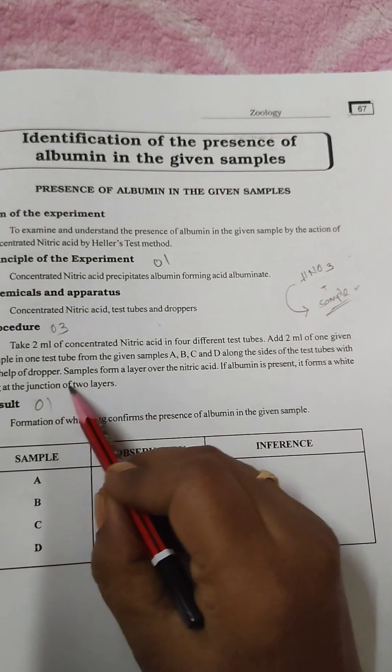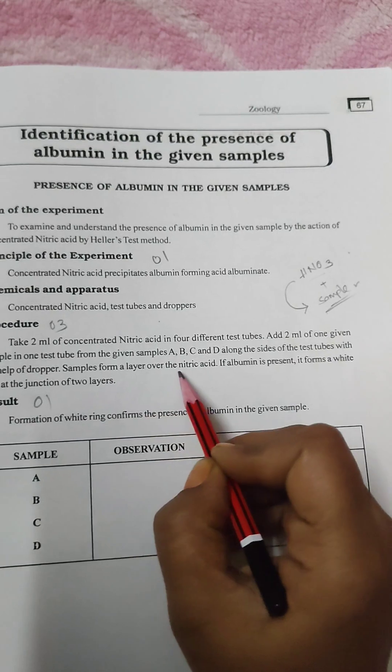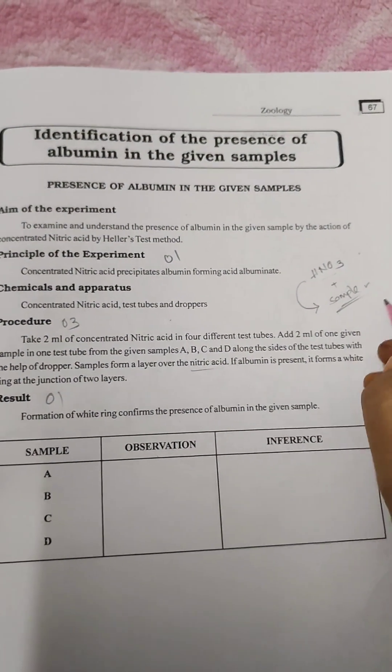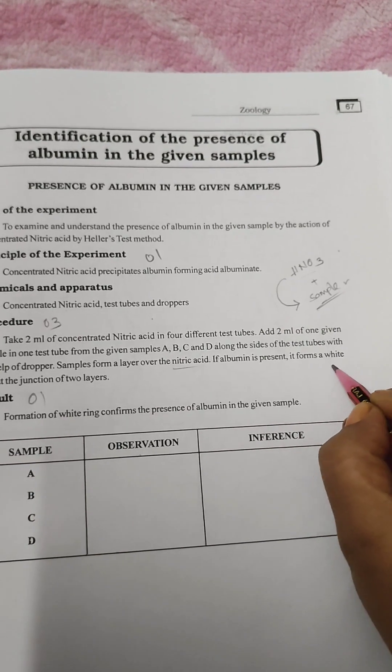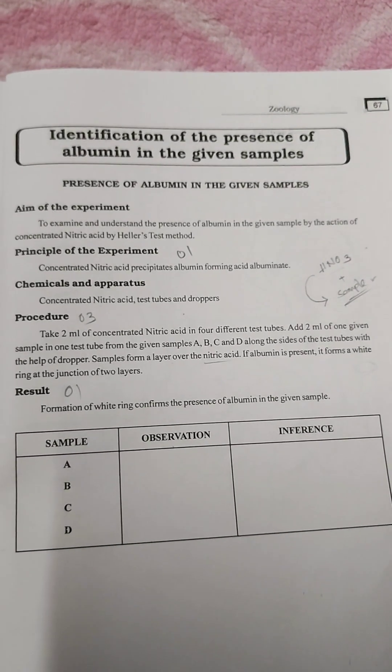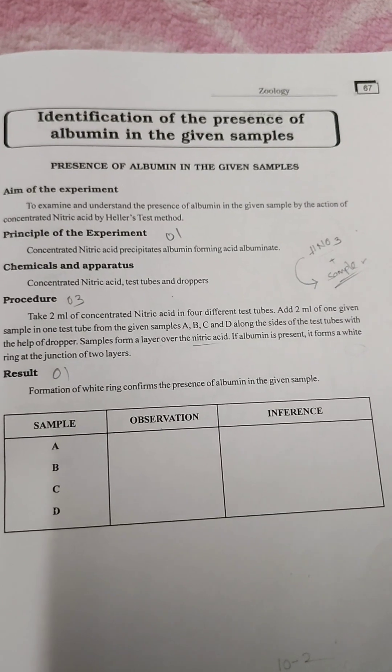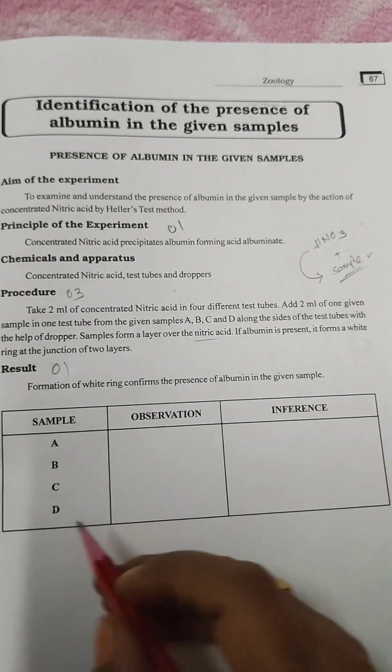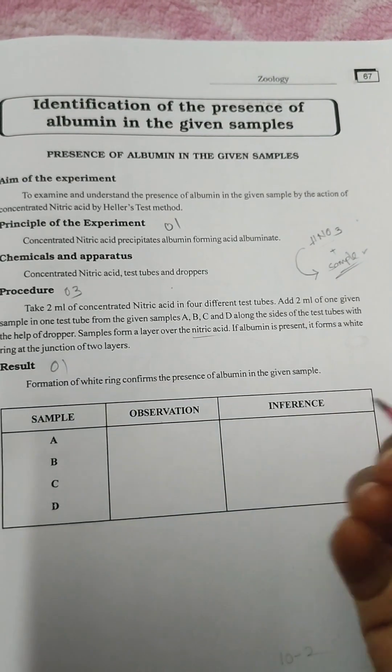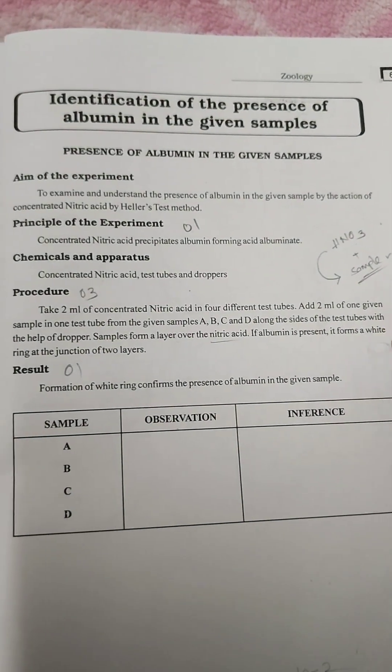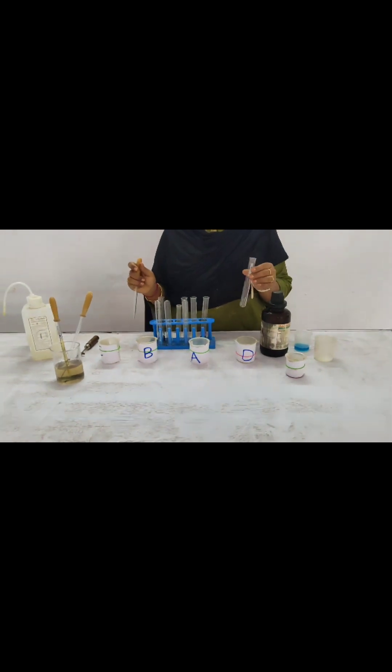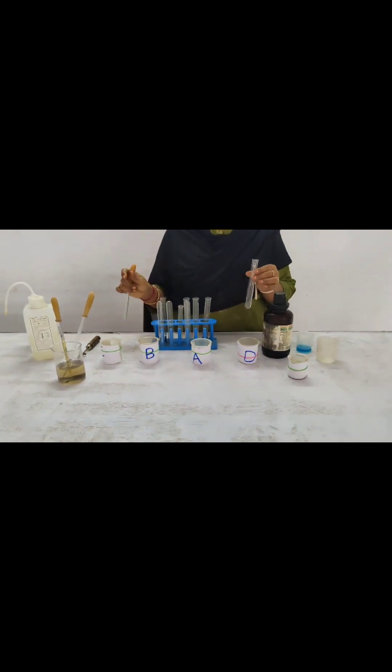The samples form a layer over the nitric acid. At the junction of the two layers, a cloudy ring or white ring appears in the test tube. Due to that we can identify the albumin is present in whatever sample respectively. If B, C, or D is present in that sample, the albumin is present, to identify the albumin present in the given sample.